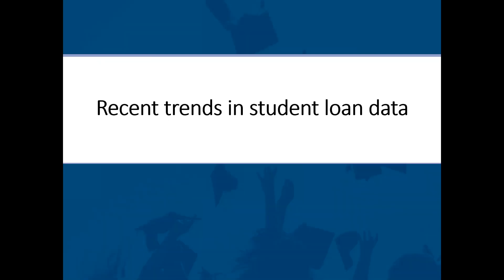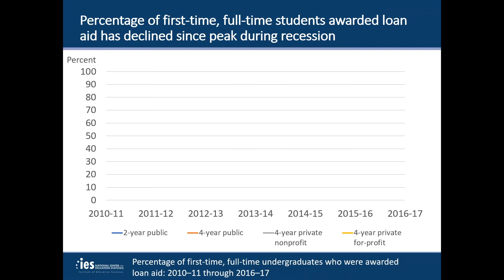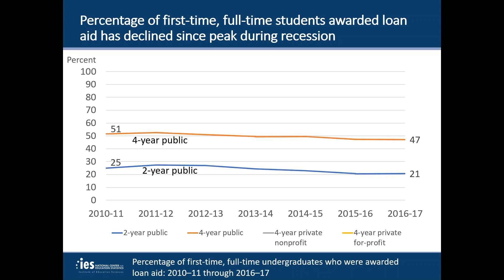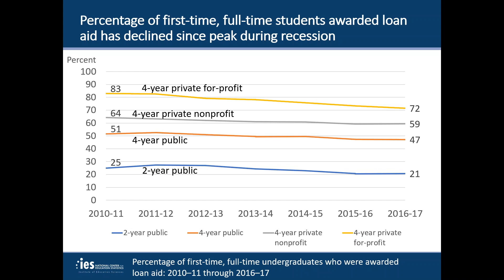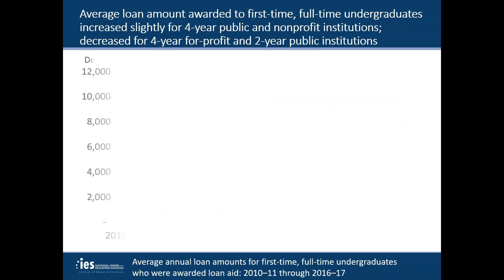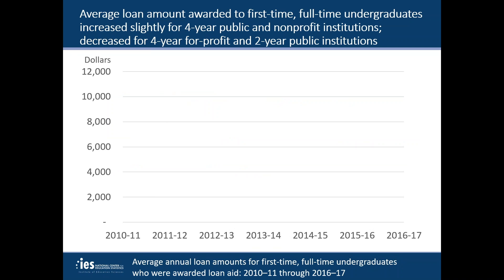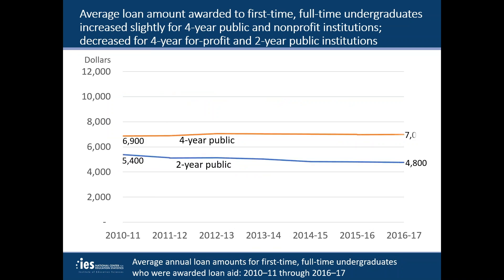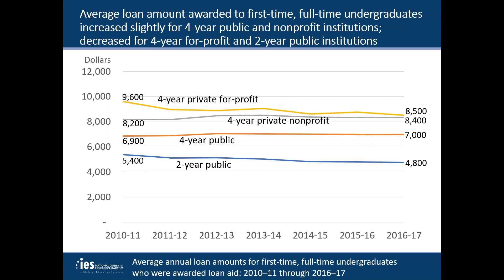The core indicators also examine recent data on loans for undergraduate students. The percentage of first-time, full-time undergraduate students who were awarded student loans has declined somewhat since 2010-11. You can see that decrease across two-year public and four-year public, private nonprofit, and private for-profit institutions. During this time period, the average loan amount awarded to those same students increased slightly at four-year public and private nonprofit institutions, and decreased at four-year private for-profit and two-year public institutions.